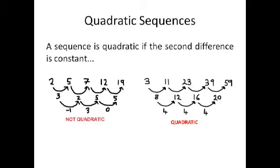First we're going to look at quadratic sequences. A sequence is quadratic if the second difference is constant, and the second difference is the difference between the differences of the numbers. The one on the left isn't quadratic because all the second differences are different, whereas the one on the right they've all got the same second difference of 4 so it's quadratic.